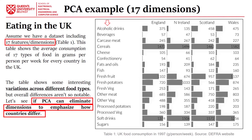The features are the average consumption of 17 types of food in grams per person per week. This is 1997 UK food consumption data, so currently there might be some differences in the values of these features.